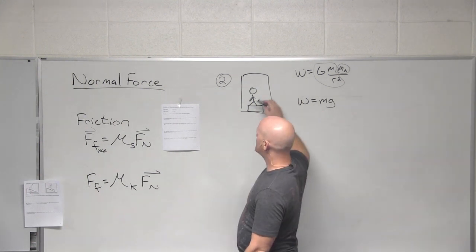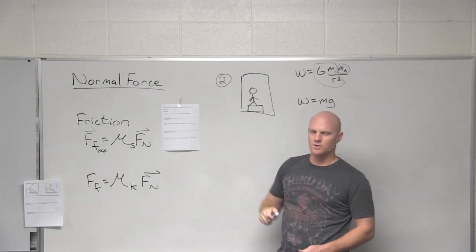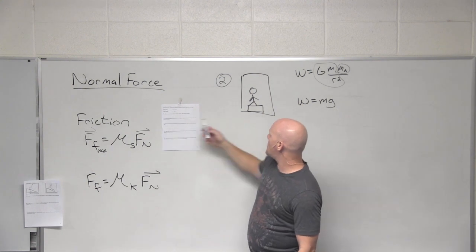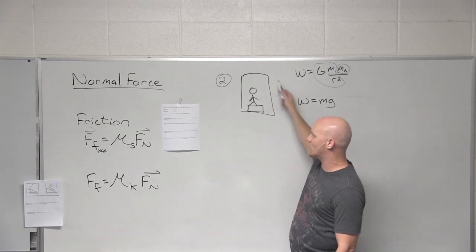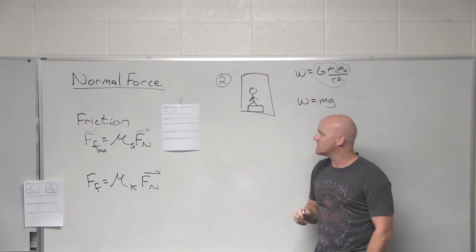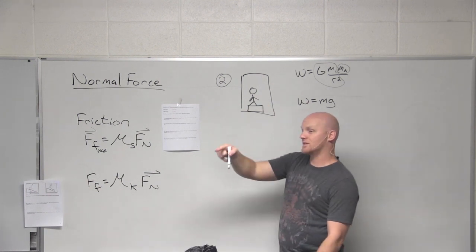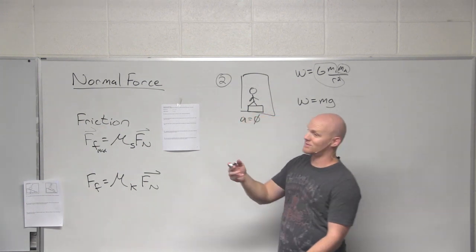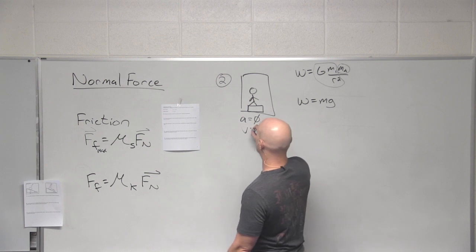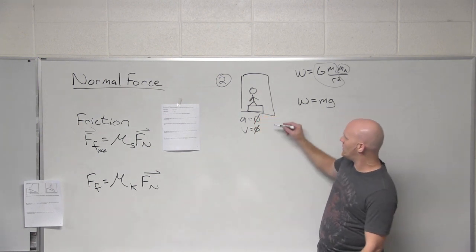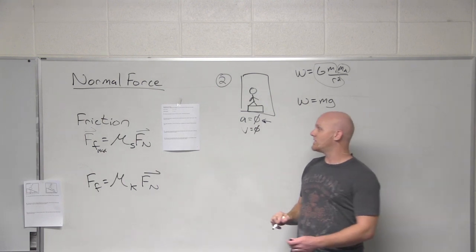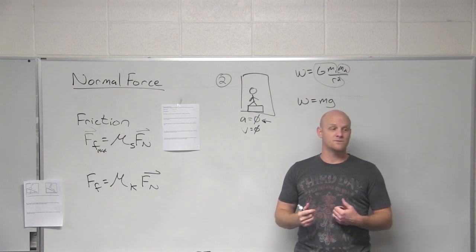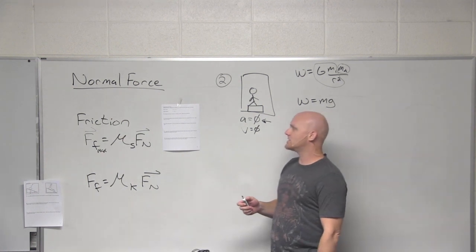So in problem number two, we have a 50-kilogram woman — that's her mass. She stands on a scale in a stationary elevator. What does stationary mean? Not moving at all, which means no acceleration. From Newton's second law, if there's no overall acceleration, then there's no net force. We call that a condition of equilibrium.